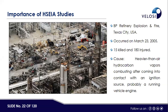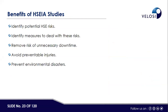One notable accident occurred in the USA on March 23rd, 2005, which killed 15 people and injured 180. The cause was heavier-than-air hydrocarbon vapors coming into contact with an ignition source, likely a running vehicle engine. This accident taught us a lesson: we must identify all environmental, health and safety impacts and mitigate them. The benefits of HSEIA include identifying potential HSE risks and the measures required to mitigate them.